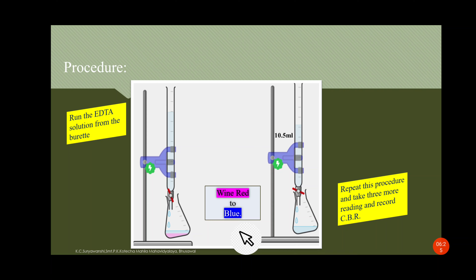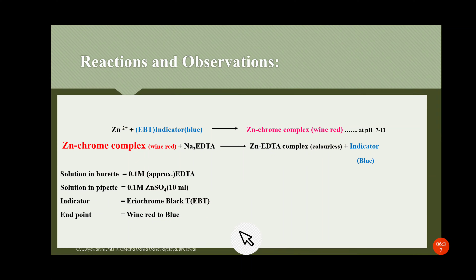Repeat this procedure and take three more readings; record the constant burette reading. The reaction: zinc ions react with Eriochrome Black T indicator (blue) to form a zinc-chrome complex having wine red color at pH 7 to 11. This wine red zinc-chrome complex then reacts with sodium salt of EDTA from the burette, forming a zinc-EDTA complex. That complex is colorless, but the indicator regains its original blue color, so the endpoint of titration is wine red to blue.